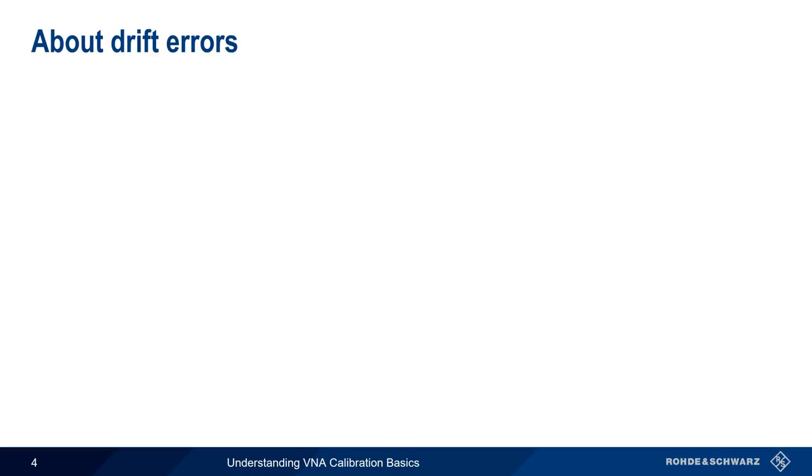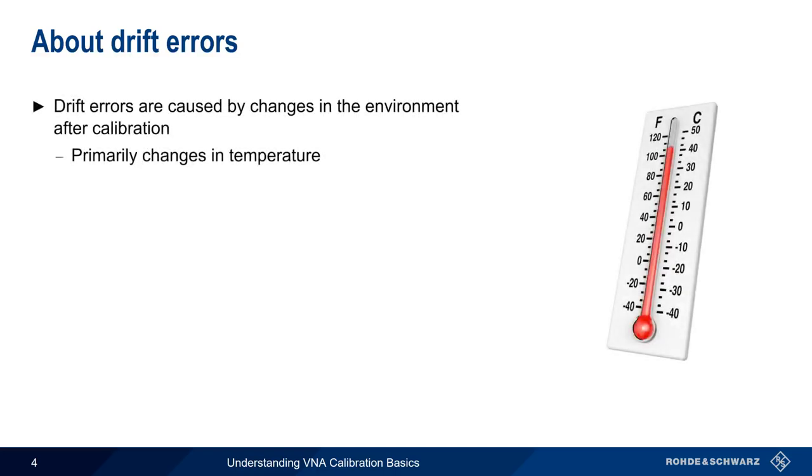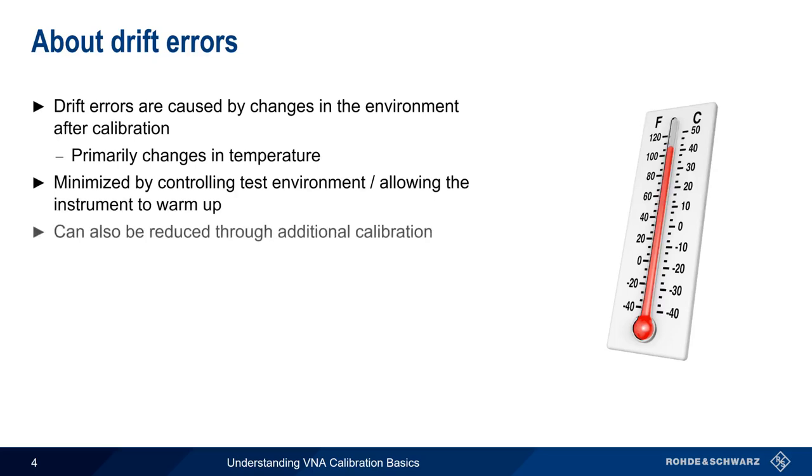Drift errors are caused by changes in the environment after calibration, and the majority of drift error is caused by temperature changes. Because of this, the main way to minimize drift error is to control the test environment and or allow the instrument time to warm up. Alternatively, we can remove drift error by performing a new calibration in the changed environment. However, even if we take these steps, we can only minimize drift error, not remove it completely.